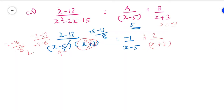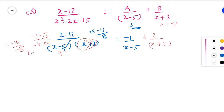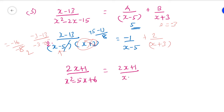Let me solve one more problem. Problem 4: (2x+1) divided by (x² minus 5x plus 6). Factorize the denominator: (2x+1) divided by (x minus 2)(x minus 3). That equals A/(x minus 2) plus B/(x minus 3).